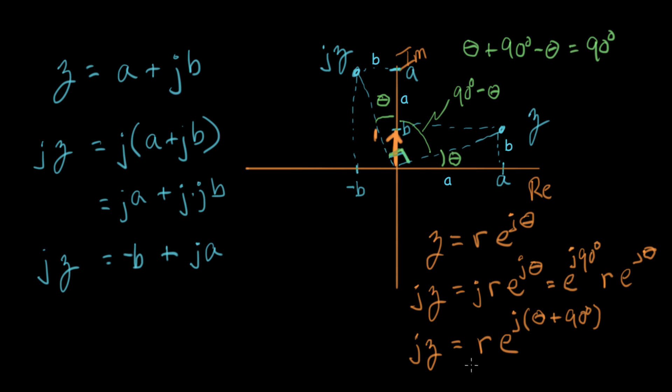So in exponential notation, we get this vector here — we go an additional 90 degree rotation and go out the same distance we had originally, R. So now we've shown that we can rotate any complex number by 90 degrees if we multiply it by J. We're going to get to apply this kind of transformation to working out the current and voltage relationships in inductors and capacitors, and that'll happen in a couple of videos from now.